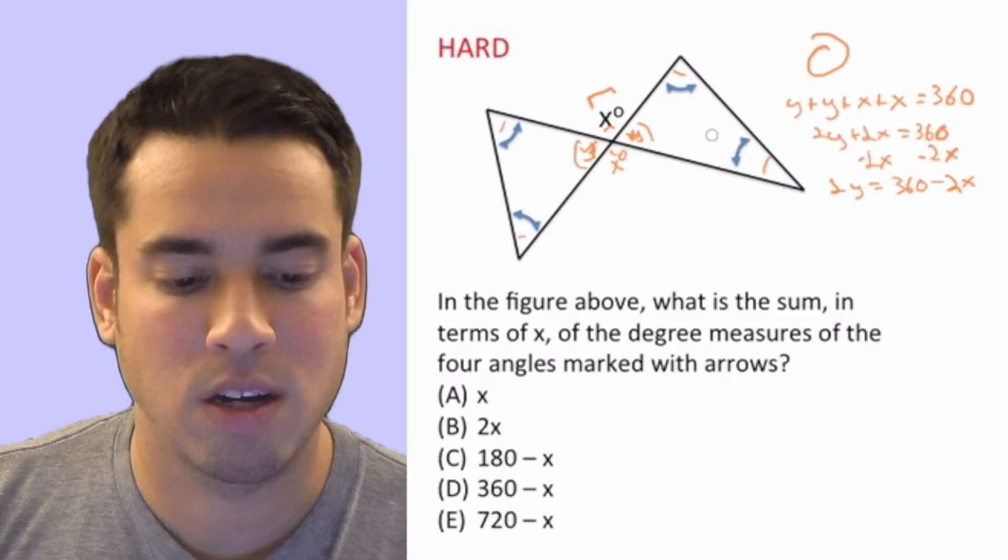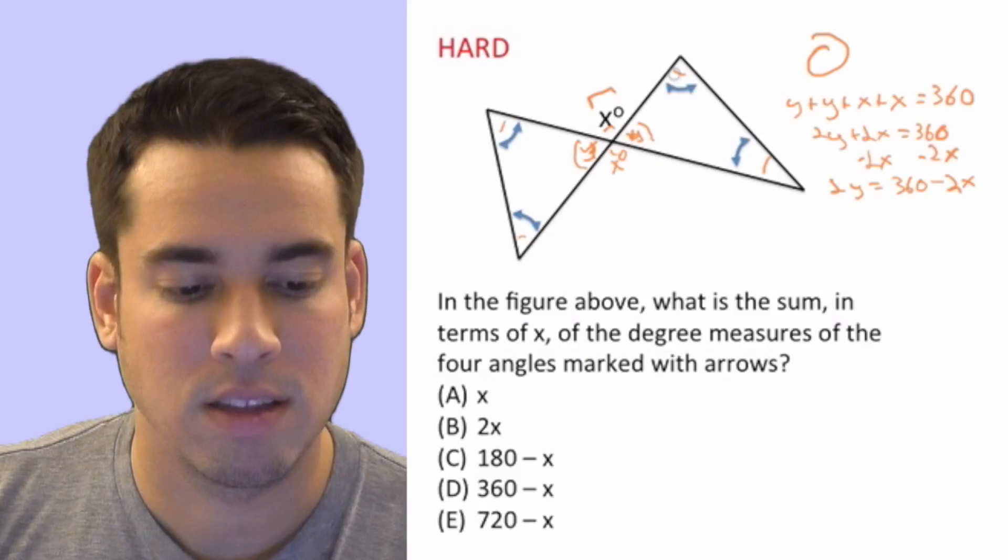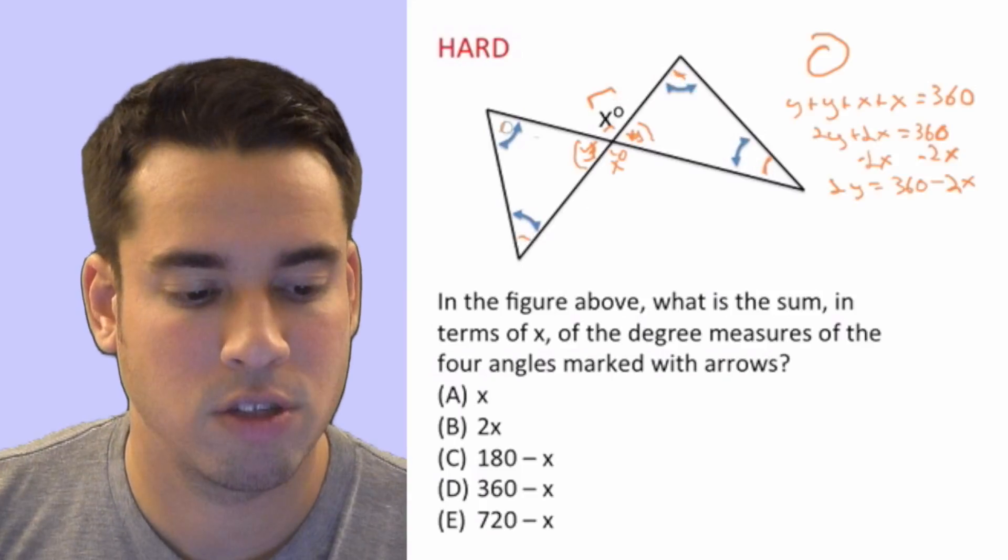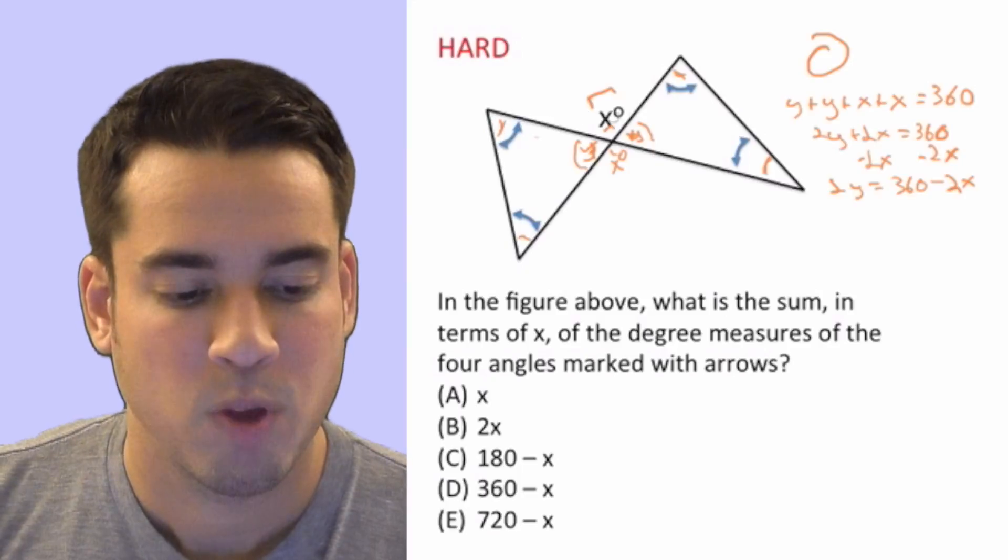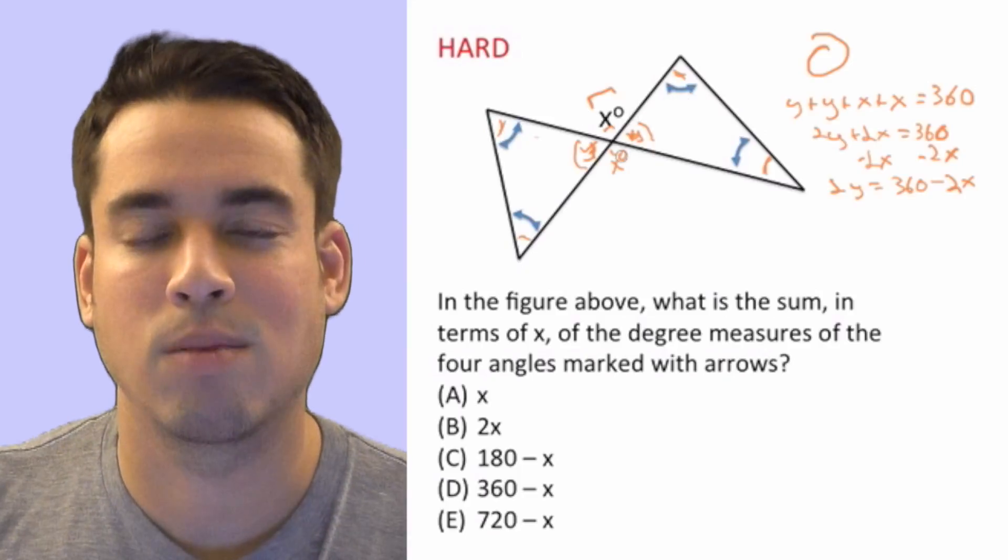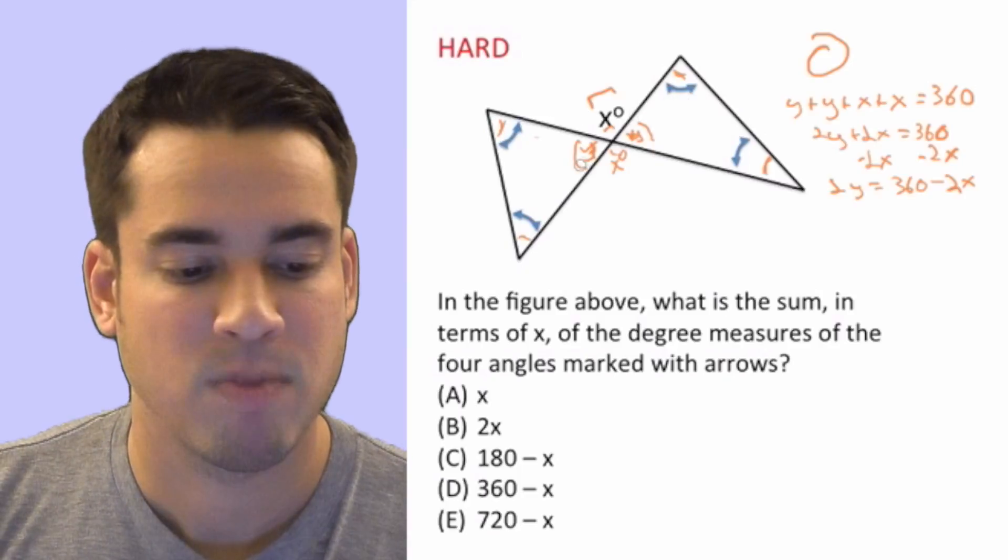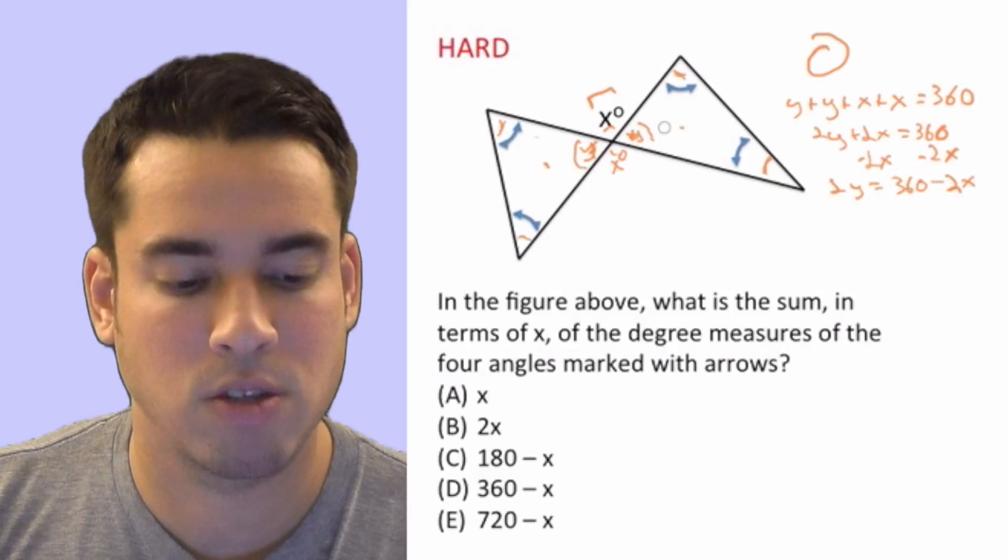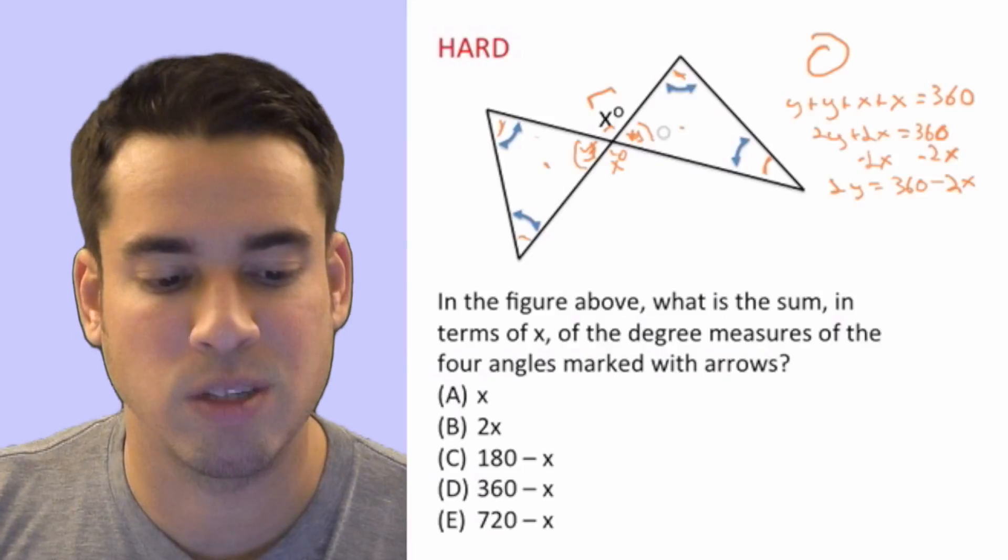You basically want to find these four angles. Now here's the cool part. When you have a triangle, all the angles add up to 180 degrees. So that's the case for both of this triangle and this triangle. Both those triangles, their angles add up to 180 degrees.